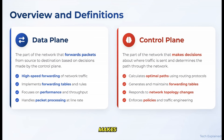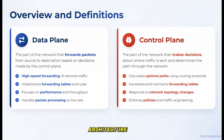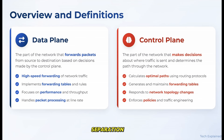The control plane makes decisions about where that data should go — it's the thinking part. These two planes work together to form a complete network architecture. The control plane figures out the best paths and sets up the rules, and the data plane follows those rules to actually move the traffic. This separation might seem simple, but it's actually a fundamental concept that shapes how networks are designed and operated.